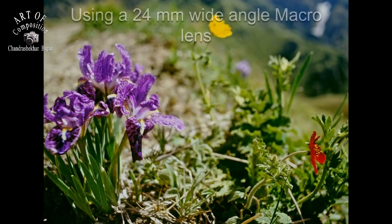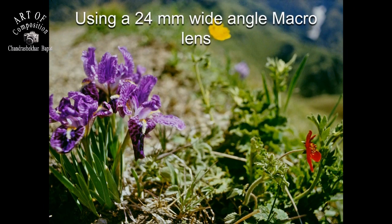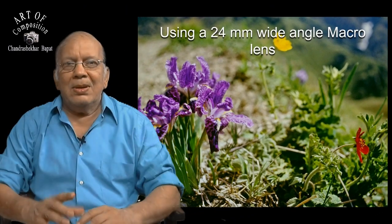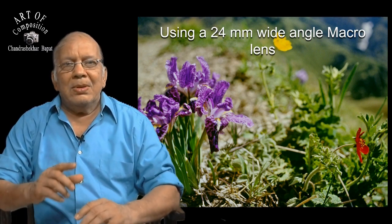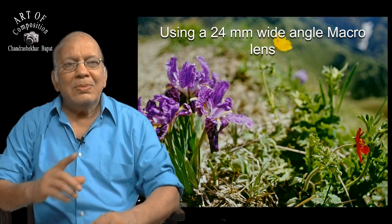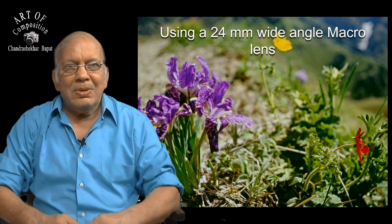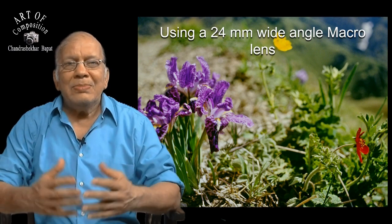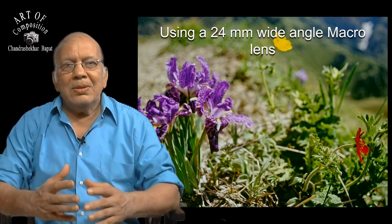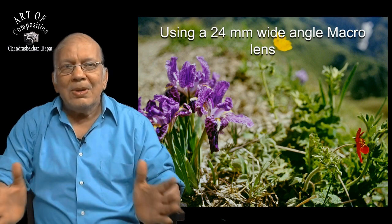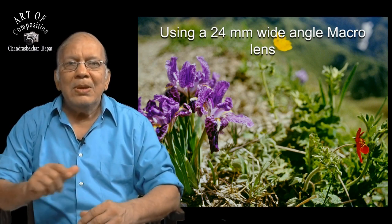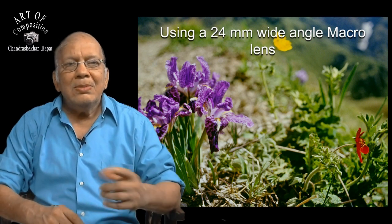When capturing photos of small natural objects, it is important to get very close to them. To achieve this proximity, you can make use of lenses with various focal lengths, and the obtained results will also be distinct and unique. For example, if you use a macro lens with a focal length of 24mm to capture photos of a flower, you will have multiple flowers appearing sharp in the photo because a lens with a shorter focal length has a deep depth of field. Moreover, a large expanse of the flower's background will also be included in the photo, creating everything sharp in the background.